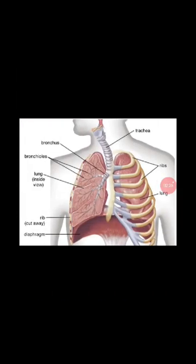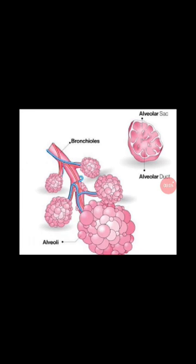Close to the lungs, the windpipe divides into two tubes called bronchi. Each tube enters the lungs. On entry into the lungs, each bronchus further divides into secondary bronchi, which further divide into smaller tubes called tertiary bronchi, and much finer tubes called bronchioles. The bronchioles ultimately lead into a cluster of tiny air-sac structures called alveoli. Alveoli are often referred to as air sacs. The alveoli are surrounded by blood vessels and are the actual sites of gas exchange.